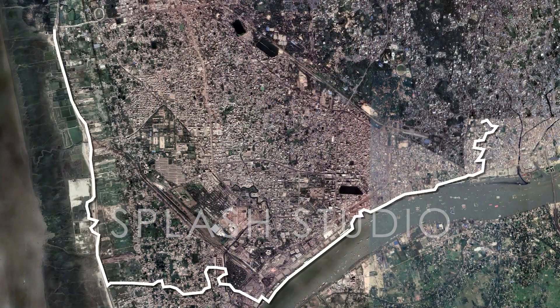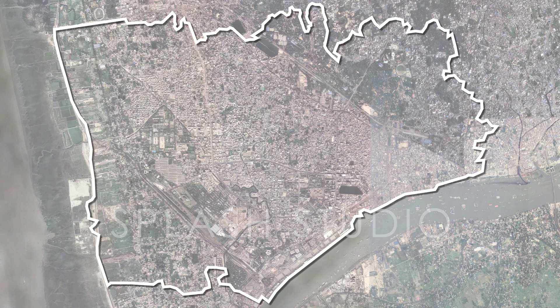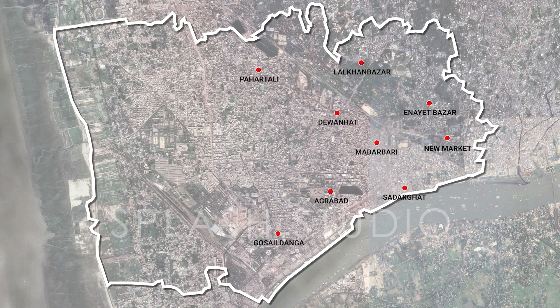The first catchment area will include Newmarket, Sadhargat, Madharbari, Lalkan Bazar, Eneyat Bazar, Agrabah, Diwanhat, Gosaldanga, Pahartoli, Patantuli, South Katali, and Halishahar.